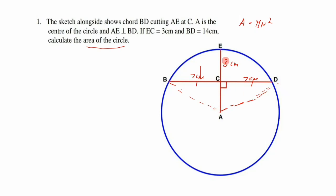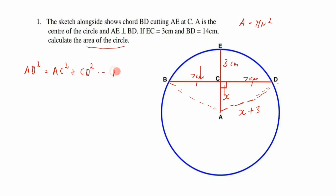EC is 3 cm. We don't know the length AC, so we call it x. Since AE is a radius, AE = AC + CE = x + 3. This is a right-angle triangle, so we apply Pythagoras: AD² = AC² + CD², giving us (x + 3)² = x² + 7².